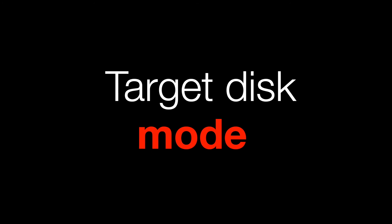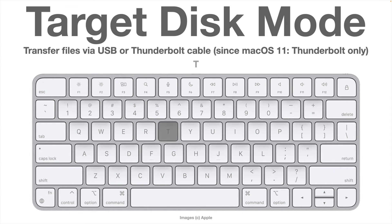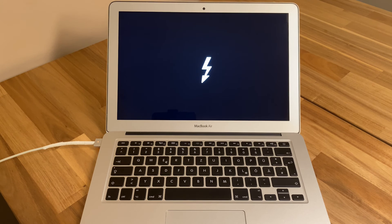A handy feature every Mac has is target disk mode. You connect two Macs with a USB or Thunderbolt cable — note that if either Mac has macOS 11 Big Sur or newer, you definitely need a Thunderbolt cable. Then set one Mac into target disk mode by keeping the T key pressed and switching it on. You'll see a small flash icon indicating it's in target disk mode, and the other Mac can access its files as an external hard drive — useful if the screen isn't working or the Mac won't boot.